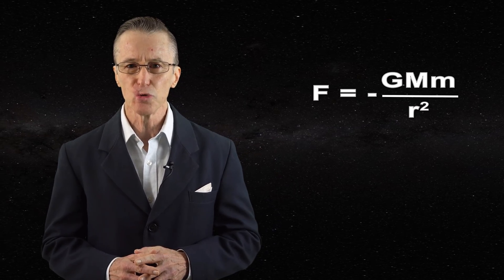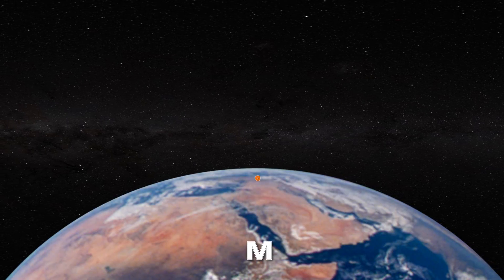Recall that the expression for Newton's force of gravity is given by this equation, which is a two-body relation. If a body of mass little m leaves the surface of a body of mass big M at the escape velocity, the initial kinetic energy is completely transformed into gravitational potential energy.